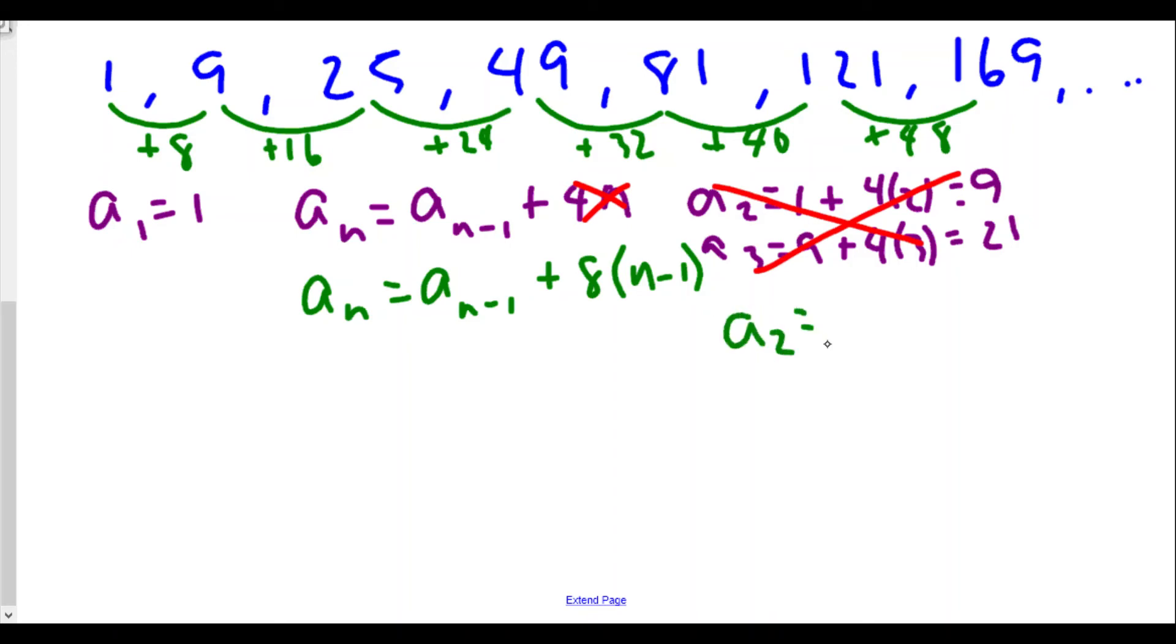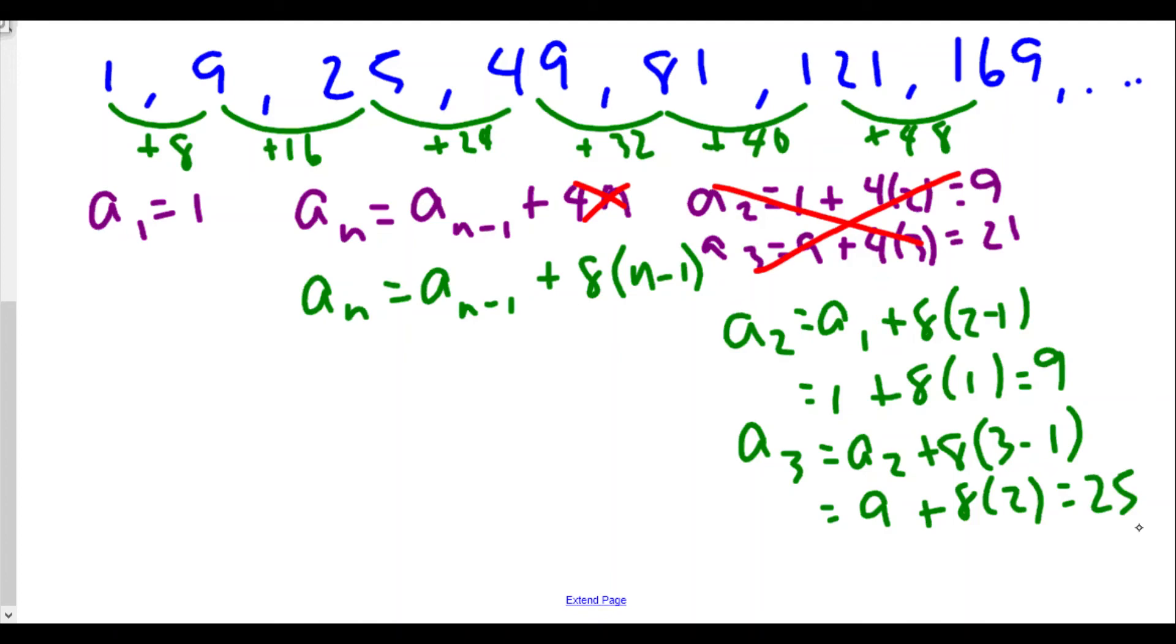Well first of it, it solves our problem of eight, so that helps out tremendously. So let's take a look. Does a2 equal to a1 plus 8 times 2 minus 1? That means you have 1 plus 8 times 1 is equal to 9. A3 equals to a2 plus 8 times 3 minus 1. That means you have a3 equals 9 plus 8 times 2.